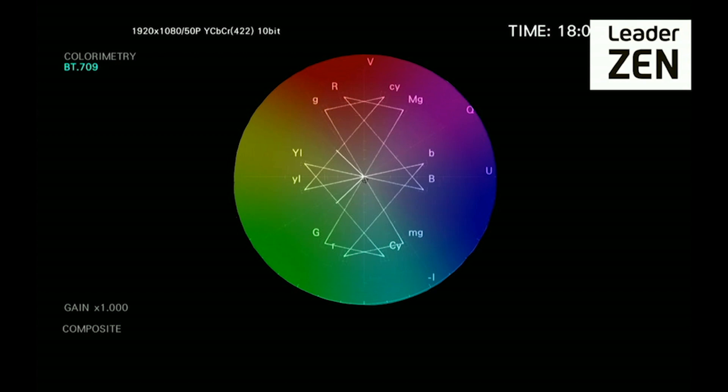Saturation defines the intensity of the colors in the active picture. The further from the center, the purer the color is. A 100% saturated color does not contain any white.